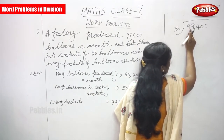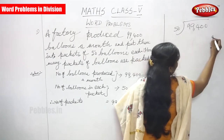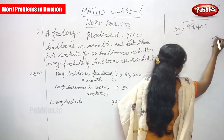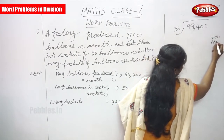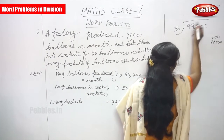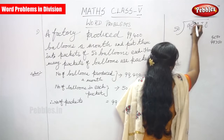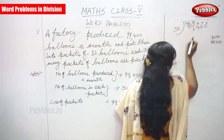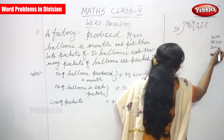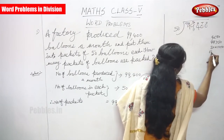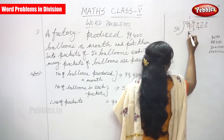Single digit — compare with 50 and 9. So, 9 is less than 50. Go to the next digit. 99 is greater than 50. So 50 into 1 you can get 50, 50 into 2 you can get 100. So you have to write only one time. That is 50.